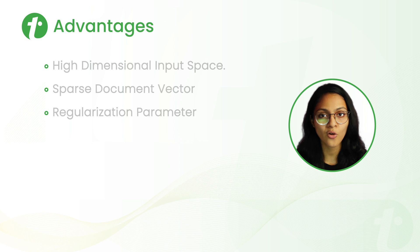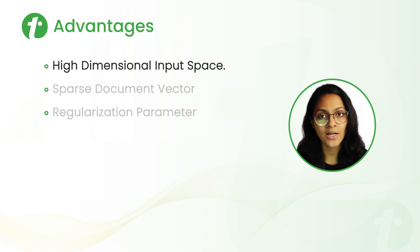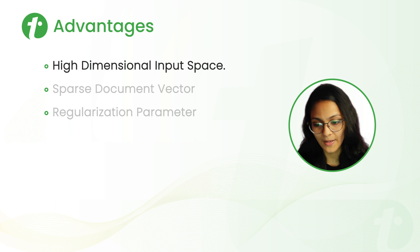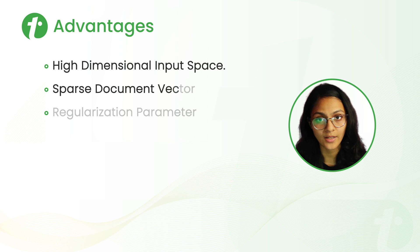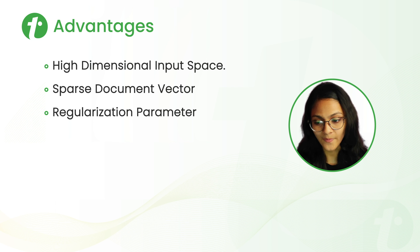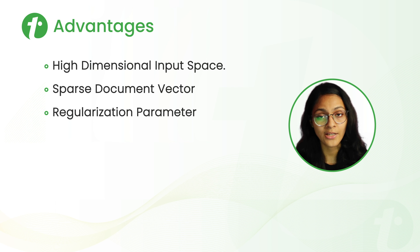Now let's discuss the advantages of SVM versus high dimensional input space. Many problems start occurring when we work in high dimensional input space in other algorithms and we need to adjust them. But SVM handles that automatically in high dimensional space. One example of high dimensional space is the sparse document vector, where we tokenize words and documents. The regularization parameter helps determine whether we are going to have bias or overfitting — something we have to manage manually in many other algorithms, but SVM naturally handles it for us.